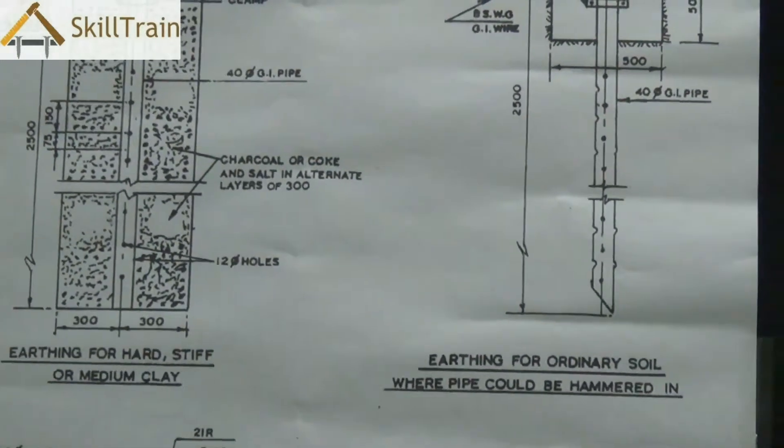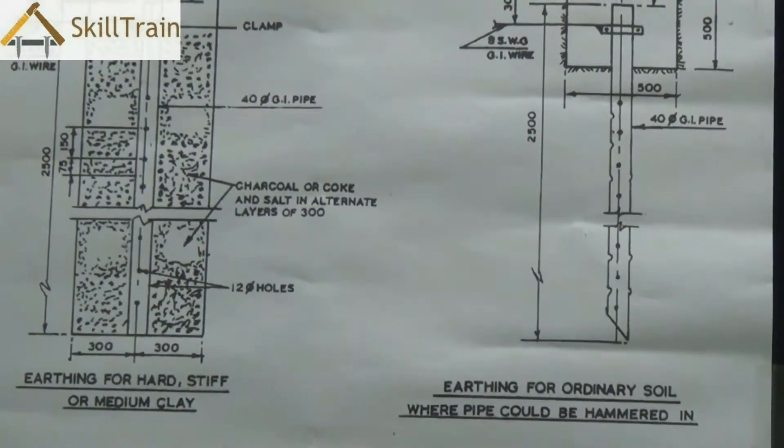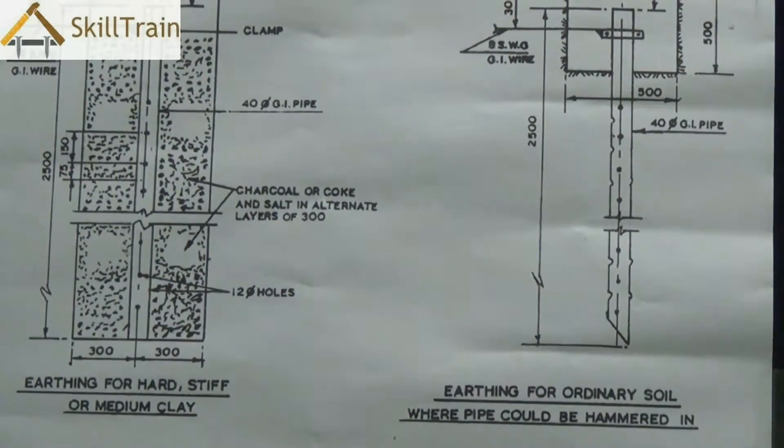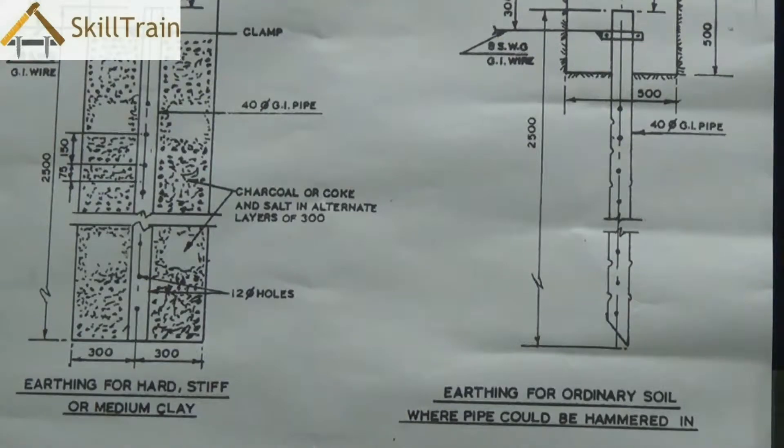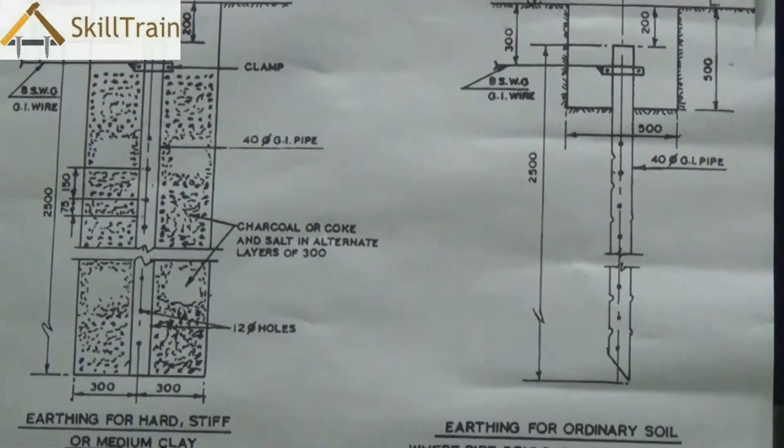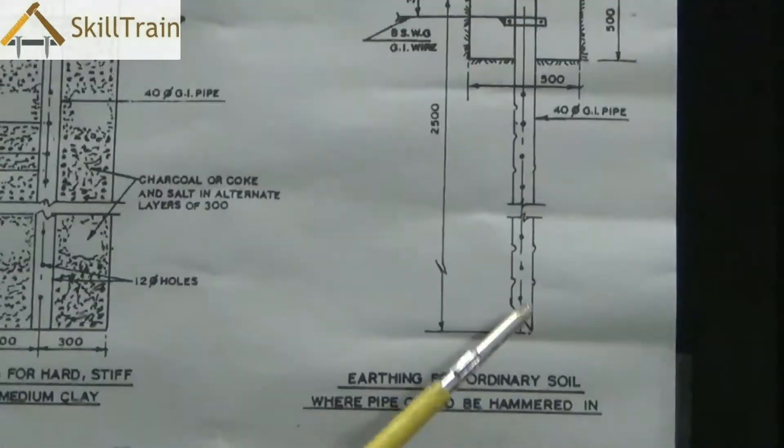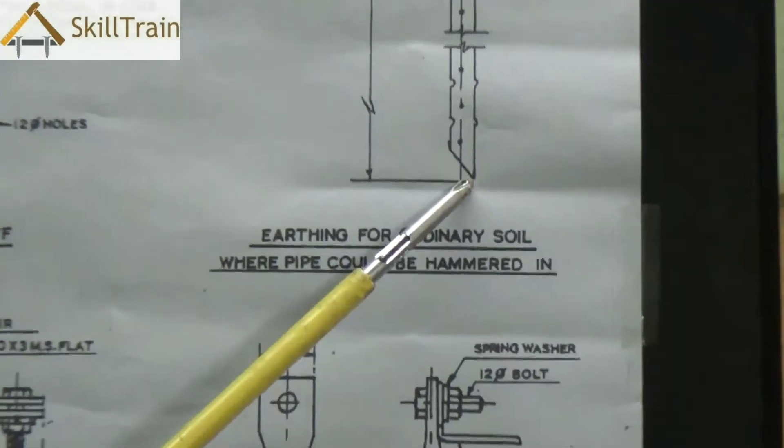The pipe or rod earthing can be done slightly differently for different types of soils. If the soil is moist or a little wet, you can actually do the earthing directly onto the soil without having to use clay or salt.